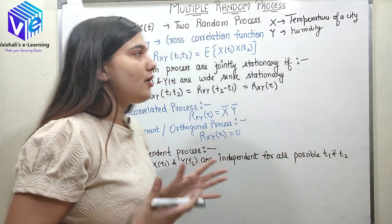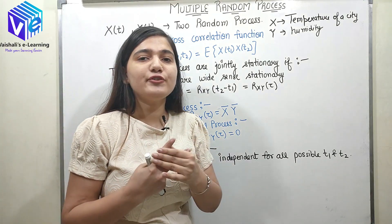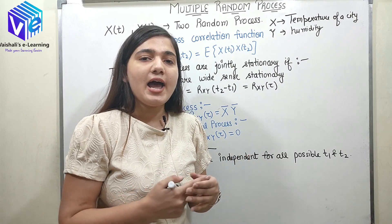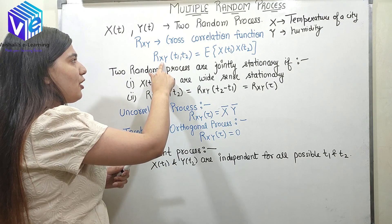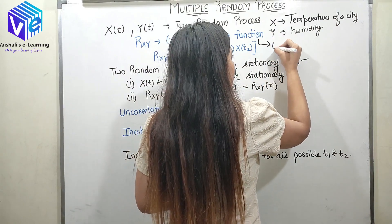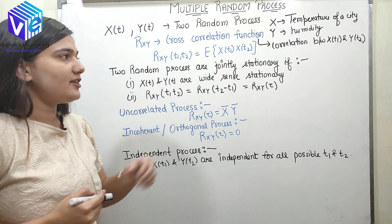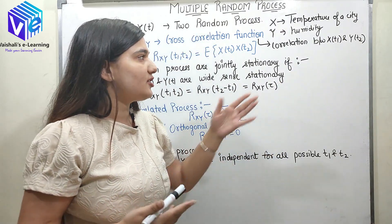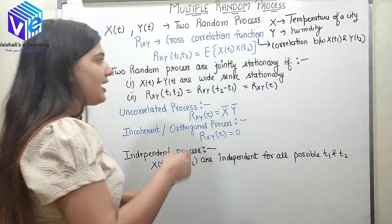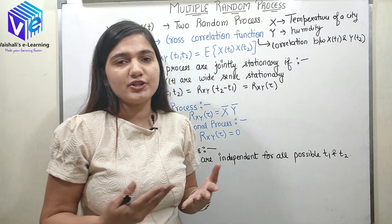Now coming to the properties. The first property is the cross correlation function. If I have two random processes and I want to see the relation between them, I can find out the relationship using the cross correlation function. The cross correlation function tells me the correlation between X(t1) and Y(t2) — the relationship between random process X at time t1 and random process Y at time t2 is given by the cross correlation function.